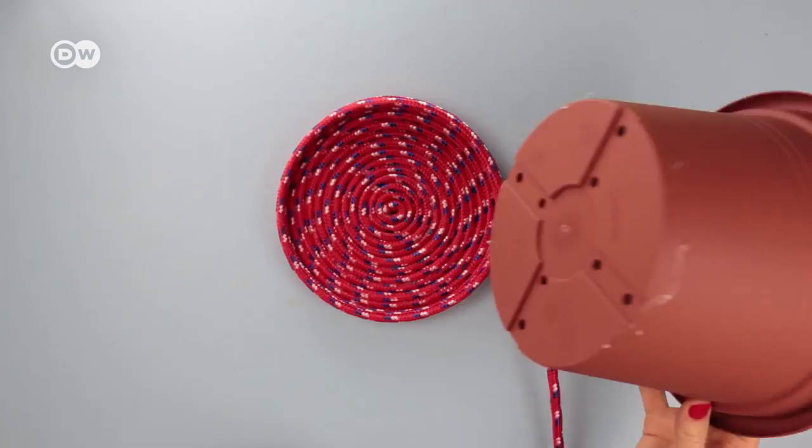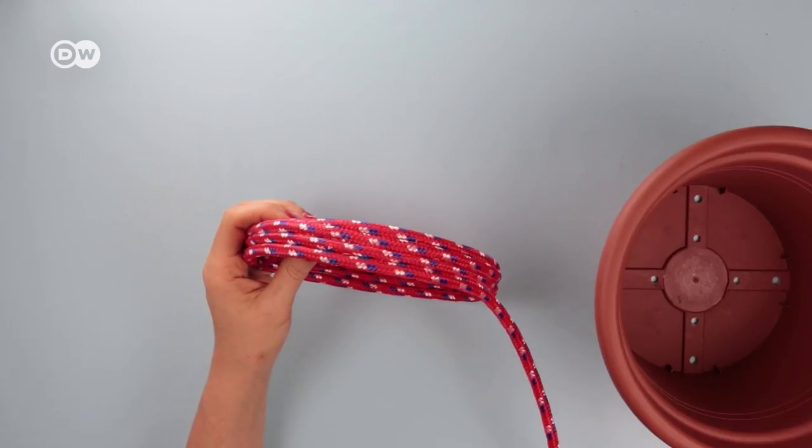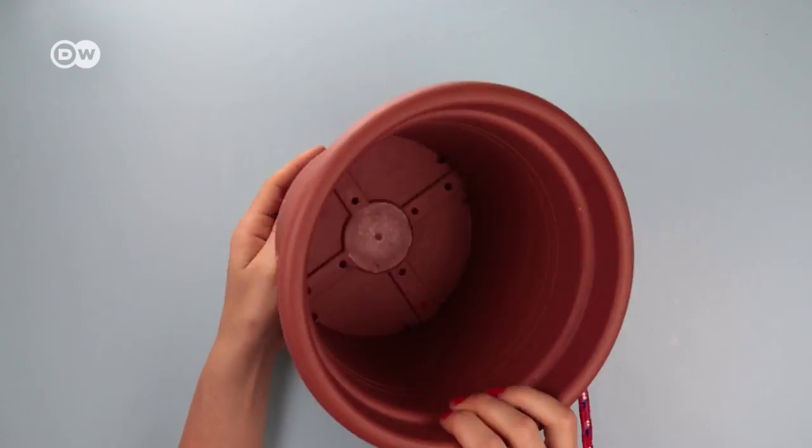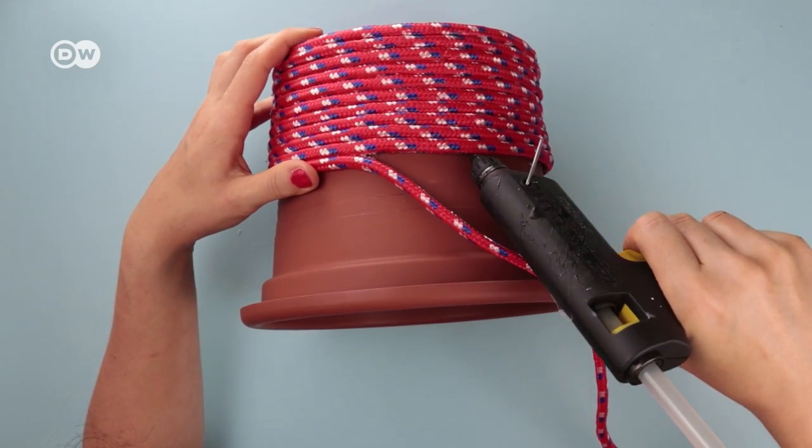And here you could stop after just a few rows and you'd have a pretty little bowl. But we'll keep going and wind the cord around to the lip of your mold or until your cord runs out.